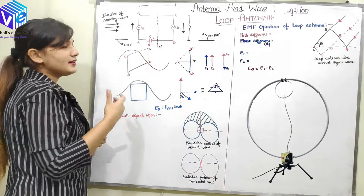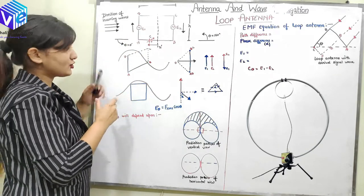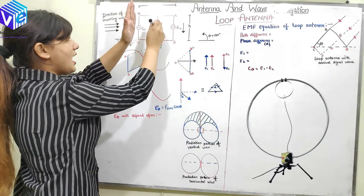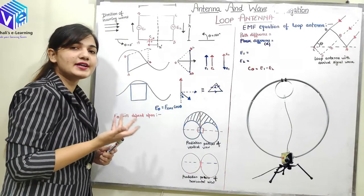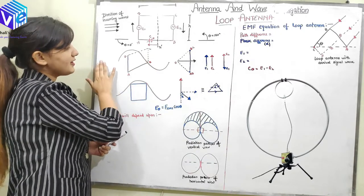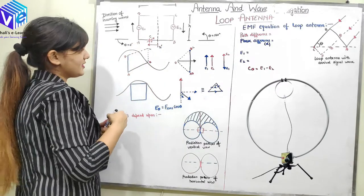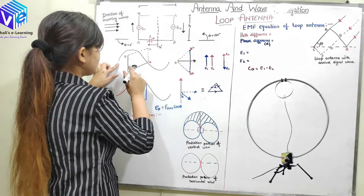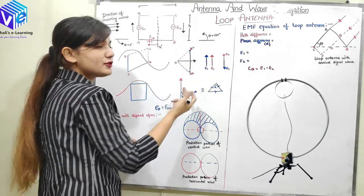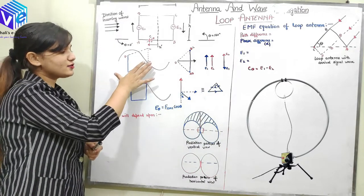Now I will look at the induced EMF in the vertical arms only. In the perpendicular case — when the loop antenna is perpendicular to the direction of the incoming wave — the vertical arms AD and BC are at the same distance with respect to the incoming wave. The same electric field is produced in both arms but in opposite directions. Since the vertical arms are at equal distances from center O, the EMF produced is equal but opposite, so they cancel out and I get no induced EMF.